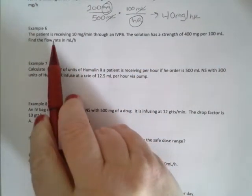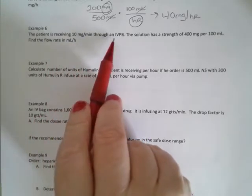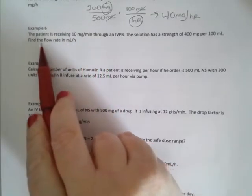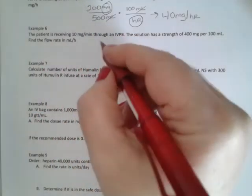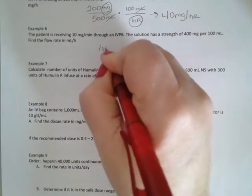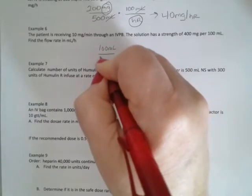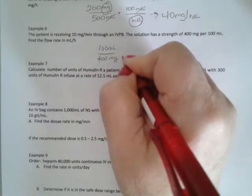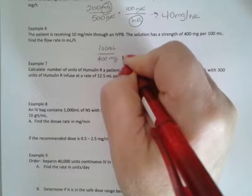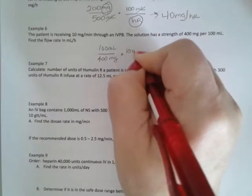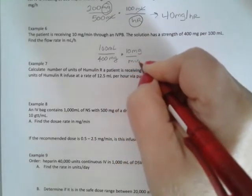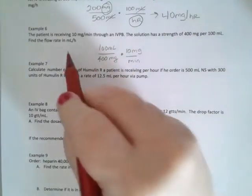Next, they're receiving 10 milligrams per minute through an IV piggyback. The solution has a strength of 400 milligrams per 100 milliliters. We're finding the flow rate. So my strength is 100 milliliters with 400 milligrams, running at 10 milligrams per minute. Now what do they want? Milliliters per hour.